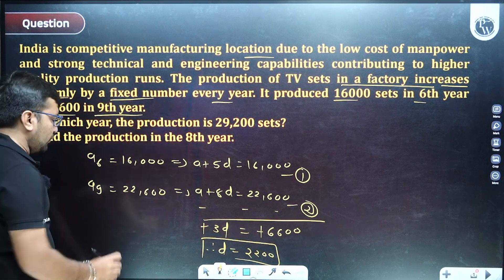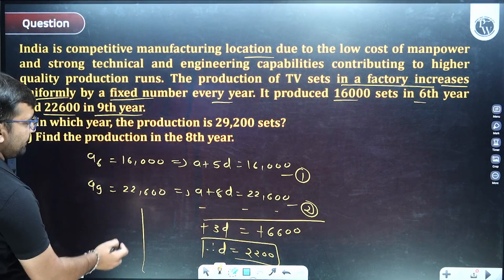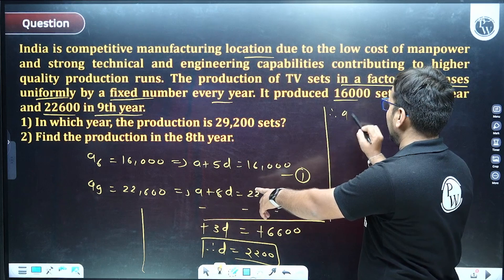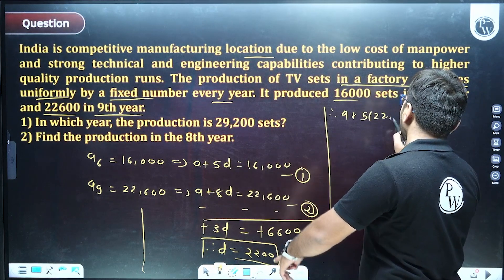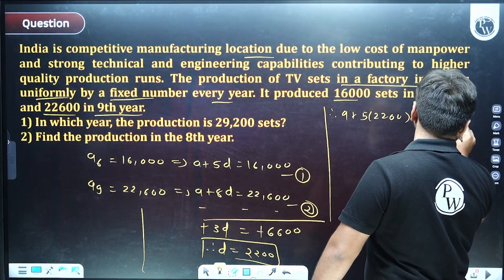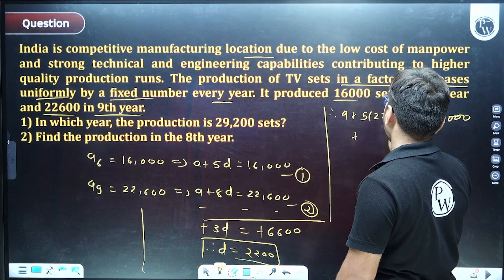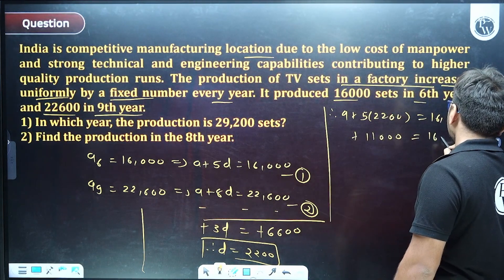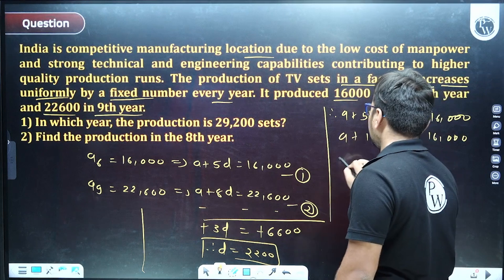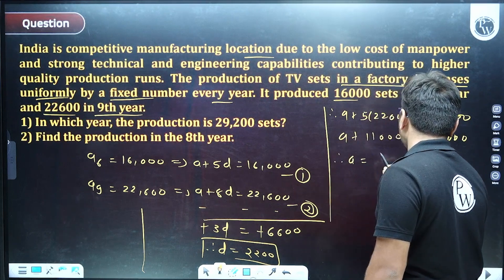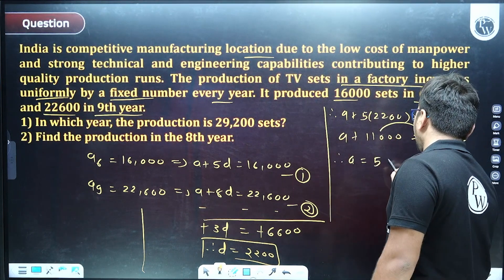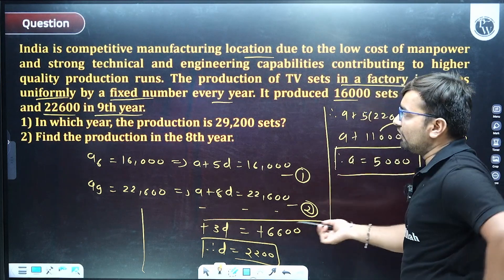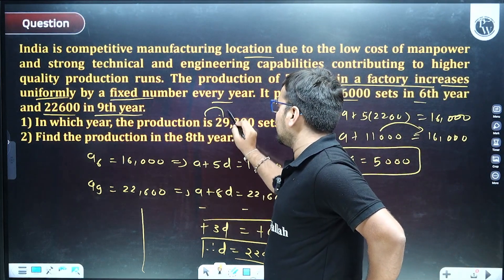Now substitute d = 2,200 into equation one to find the first term: a + 5 × 2,200 = 16,000, so a = 16,000 − 11,000 = 5,000. The first year production of TV sets for this company is 5,000. Now that we have a and d, we need to find in which year production will reach 29,200.